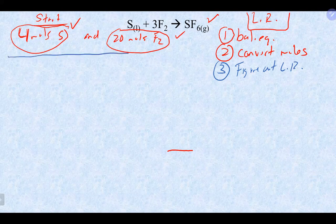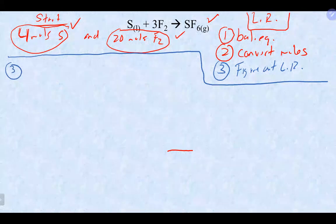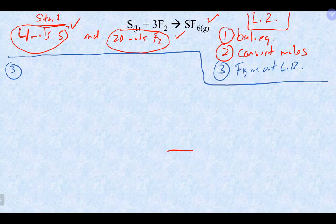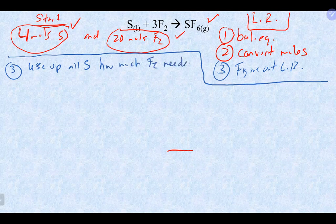One approach: take either reactant and ask, if I want to use up all of one reactant, how much of the other do I need? For example, if I want to use up all my sulfur, how much fluorine is needed? We start with 4 moles of S, do the mole-to-mole relationship — which is 1 mole S to 3 moles F2 from the balanced equation.